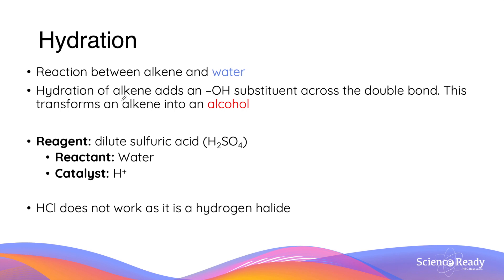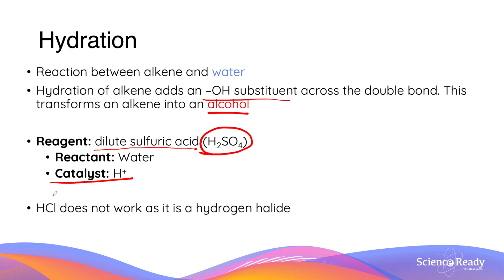The last addition reaction with alkenes is hydration. This is when water is used as a reactant to add an OH substituent or group to the alkene molecule. This reaction transforms an alkene into an alcohol, which is a new functional group we will look at in a future video. Hydration requires an acid as a catalyst — the most common example is sulfuric acid. Since we need both acid and water, the reagent for hydration is usually collectively referred to as dilute sulfuric acid. Keep in mind that hydrochloric acid does not work for this reaction, as it is a hydrogen halide itself — so its addition would start a hydrohalogenation reaction rather than hydration.